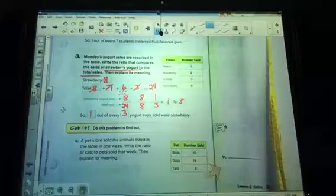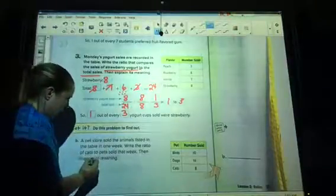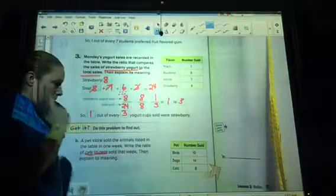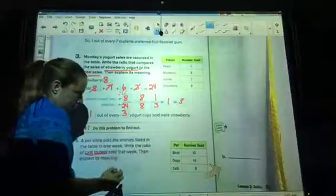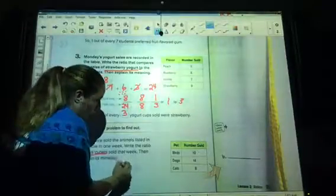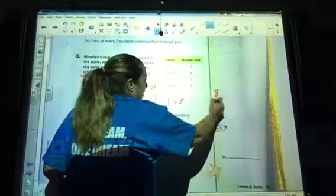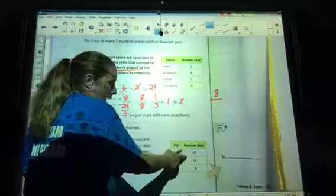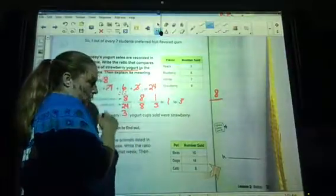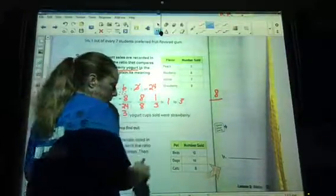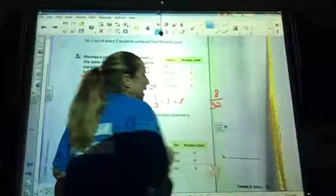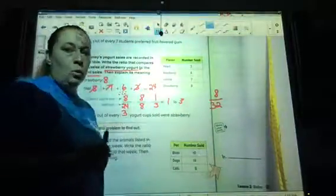A pet store sold animals listed on the table in one week. Write the ratio of cats to pets sold that week and explain the meaning. How many cats do we have? I'm going to write over here so we got a little more room. We have eight cats. And what is our total of pets? Well, if you added these up, 10 plus 14 is 24. And 24 and eight is 32. So eight out of 32 pets sold were cats.